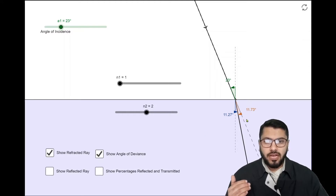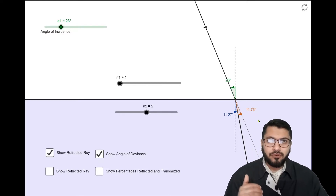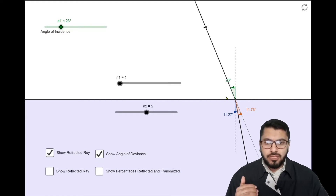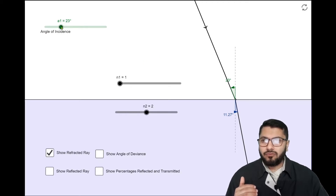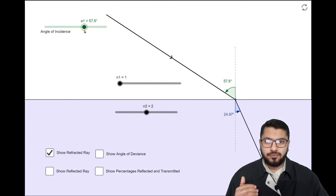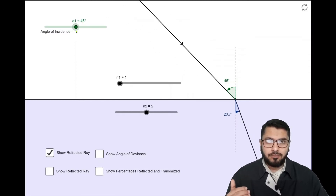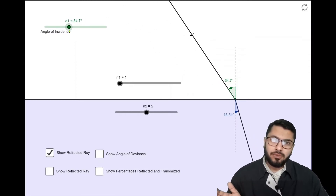Now if there is no glass involved, the incident ray will move straight — I have shown this with a dotted line. If there is no medium difference, the light ray will move straight, but due to the difference of medium the light is shifting towards the normal. If I increase the angle of incidence, you can see the angle of refraction is also changing. This is the phenomenon we need to see in the case of lateral displacement.